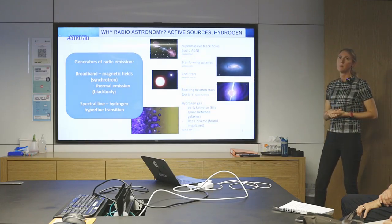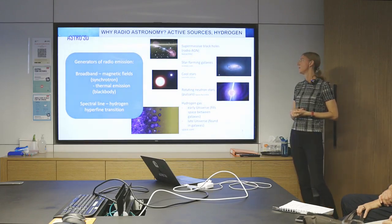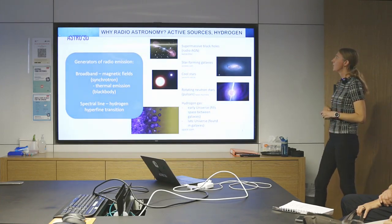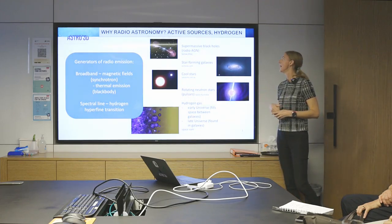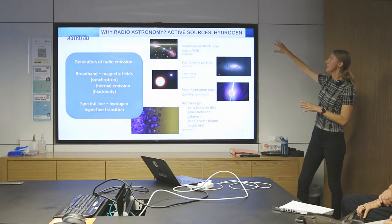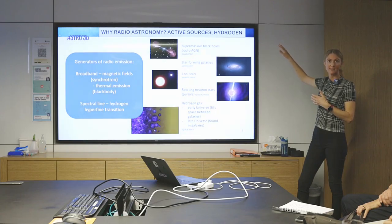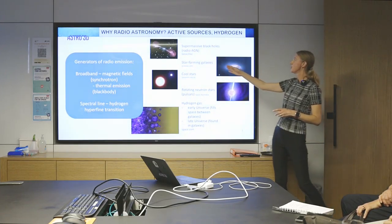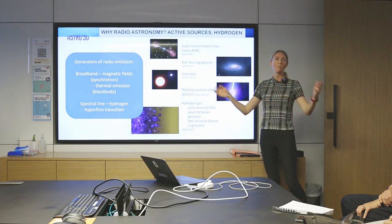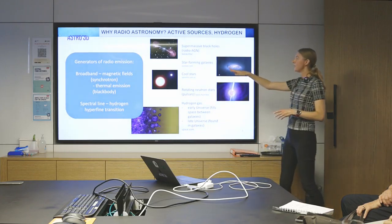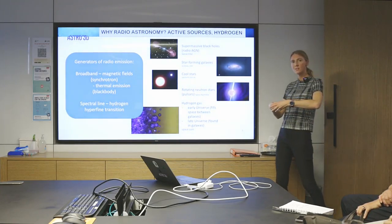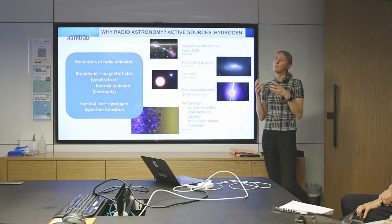Okay, so this is a slide I only added sort of at the last minute, because it occurred to me that people might not know why we do radio astronomy. Why don't we just look in the optical? Why don't we just look at other frequencies? What does radio astronomy provide for us that we can't get from other wavelengths? So really, radio astronomy allows us to access two types of sources. One's what I'll call active sources. And the other one is sources that are emitting hydrogen gas. And so these are two really key components.